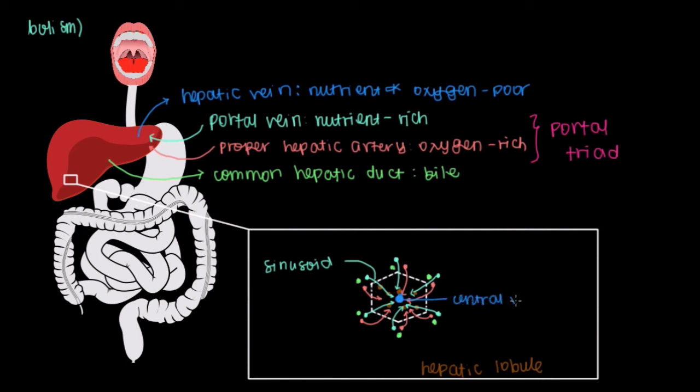So the central vein that sits in the very middle of our hepatic lobule will take our nutrient and oxygen-poor blood and then coalesce into a hepatic vein that'll be sent off to the heart for oxygenation by the lungs and then passed by the intestines to receive nutrients from the absorption process we talked about.